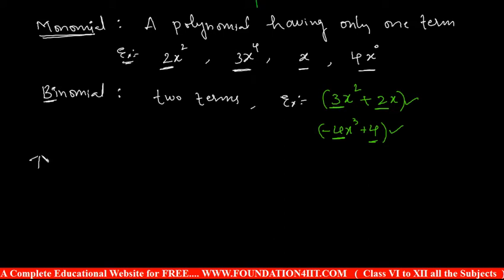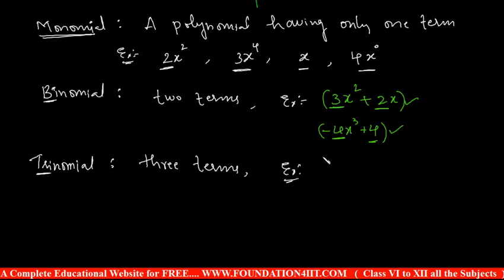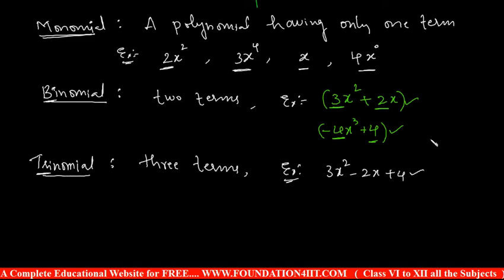If there are three terms, it is a trinomial — just like triangle has three angles, trinomial has three terms. A polynomial having three terms is called a trinomial. For example: 3x² − 2x + 4 has three terms, so it is a trinomial. More than three terms we call a polynomial generally — poly means many. We have separate names for mono, bi, and trinomial; more than three are simply called polynomials.